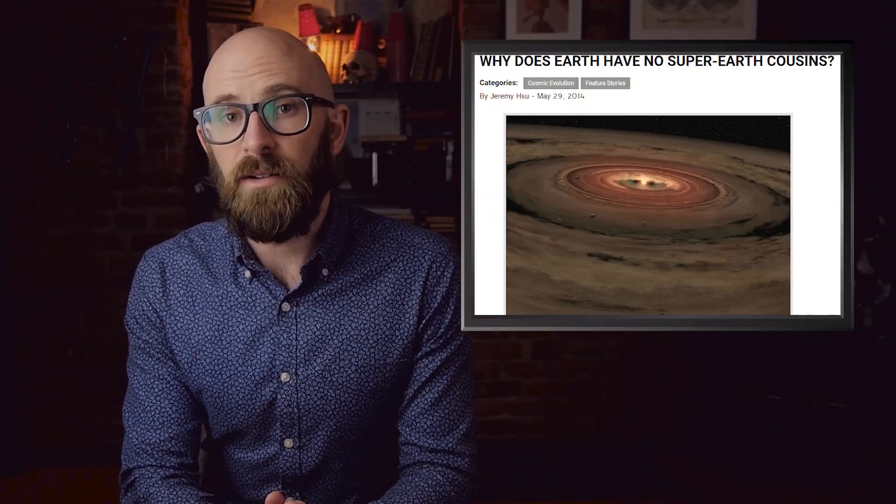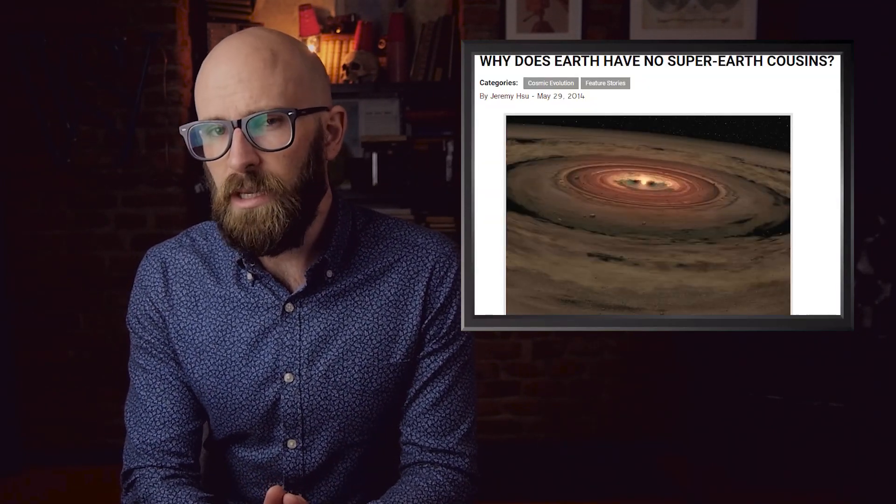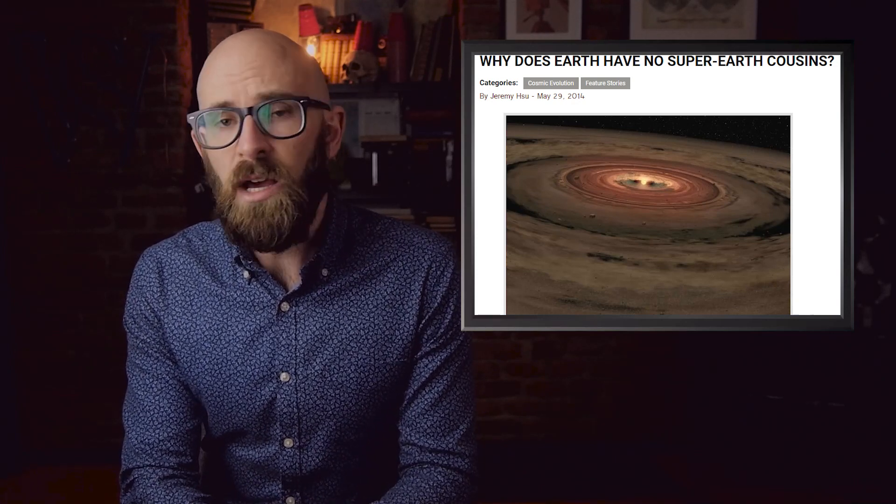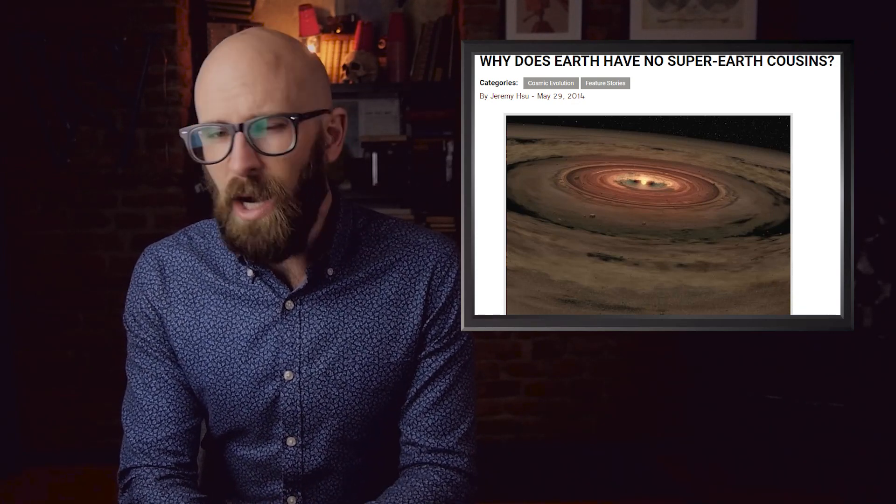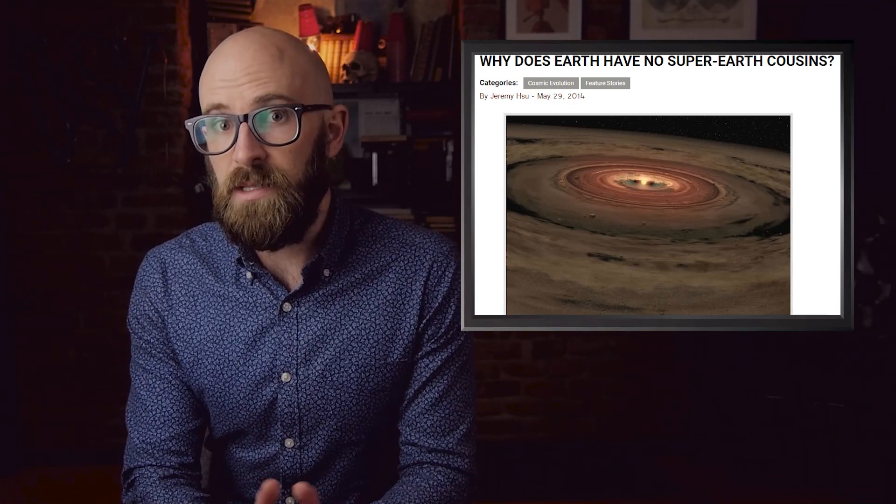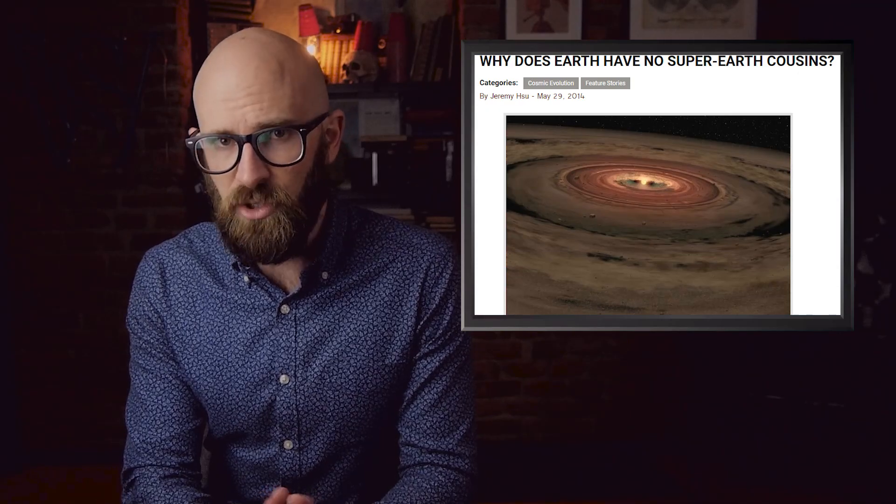As our simulations for planetary system formation have improved, we've begun to see that worlds too low in mass like ours tend to be absorbed by larger ones. So why didn't this happen in our system? Well, one theory is that early super-Earths did form, but were destroyed as described in the previous section.